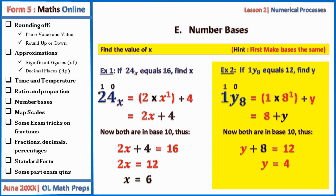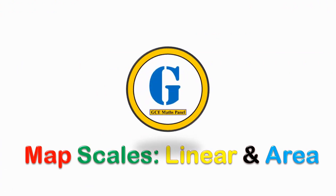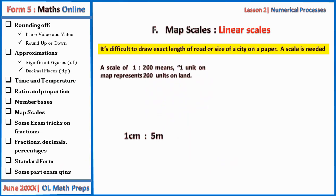We now move to the second part of this sub-lesson, which is on scales. In this lesson we look at map scales — linear and area scales. It is difficult to draw the exact length of a road or size of a city on paper, so a scale is needed. A scale of 1 to 200 means one unit on the map represents 200 units on land. For linear scales it is about length or distance.